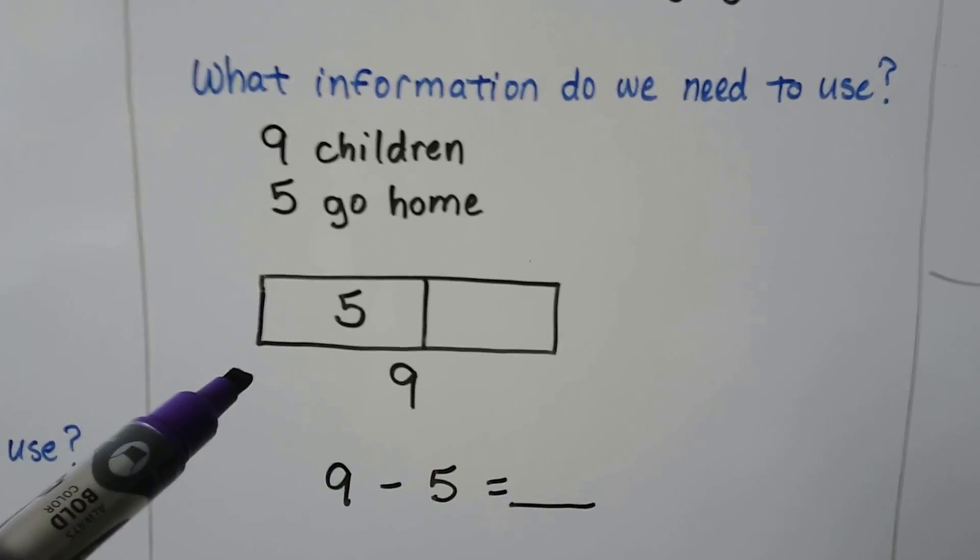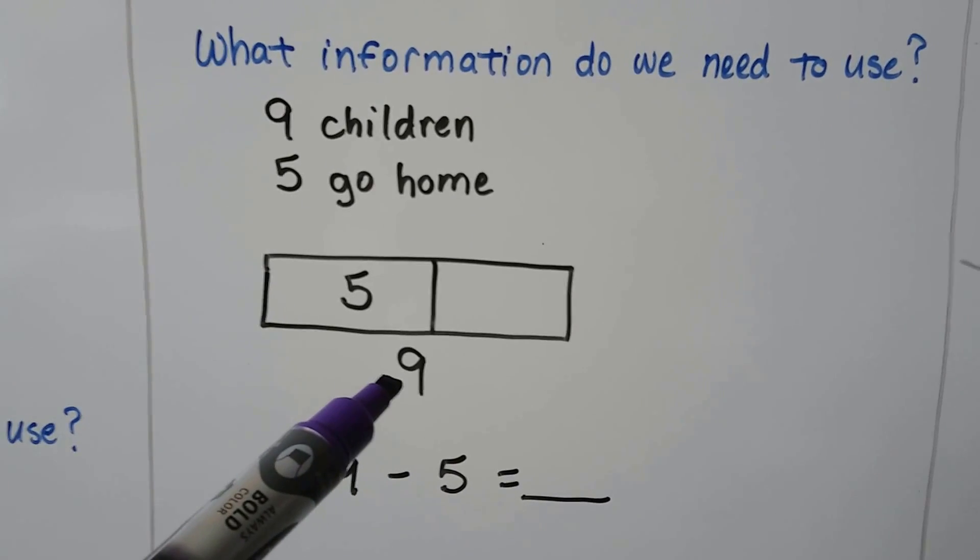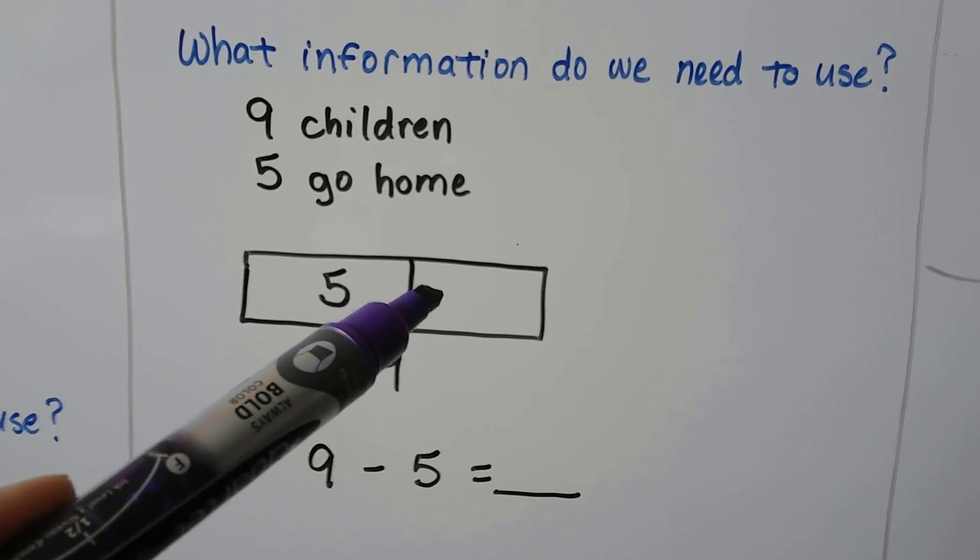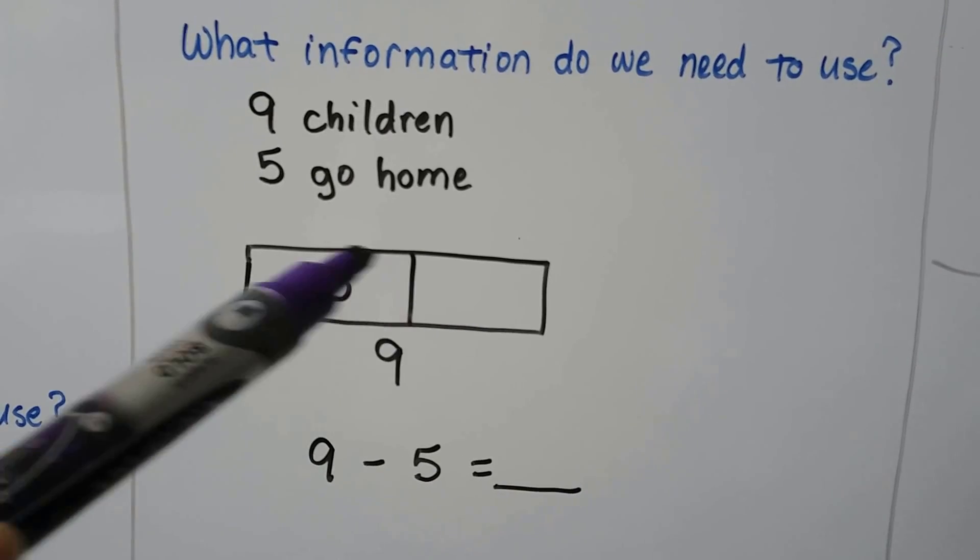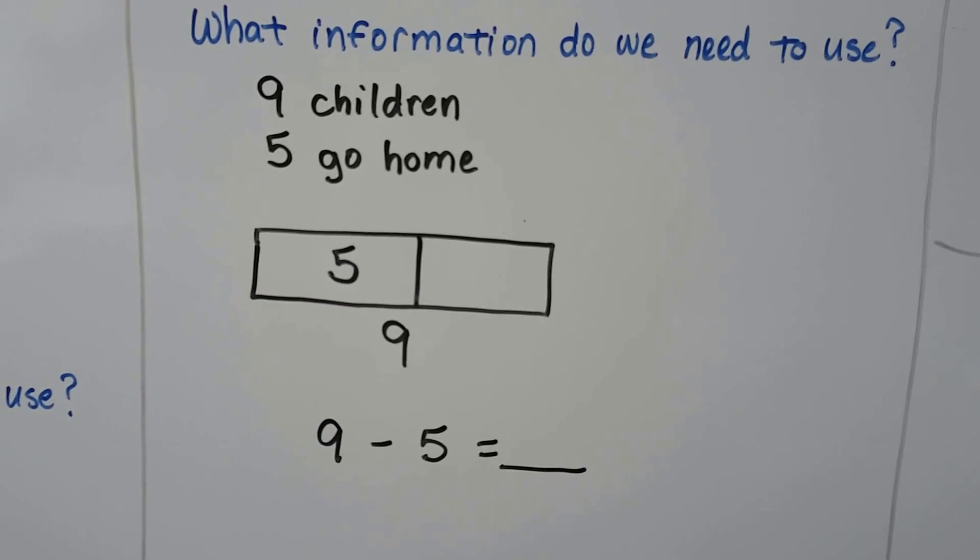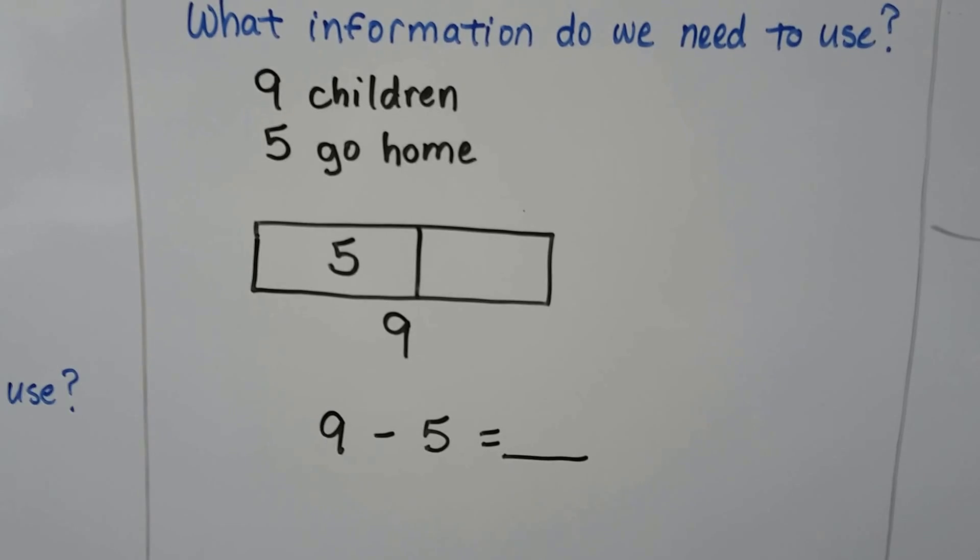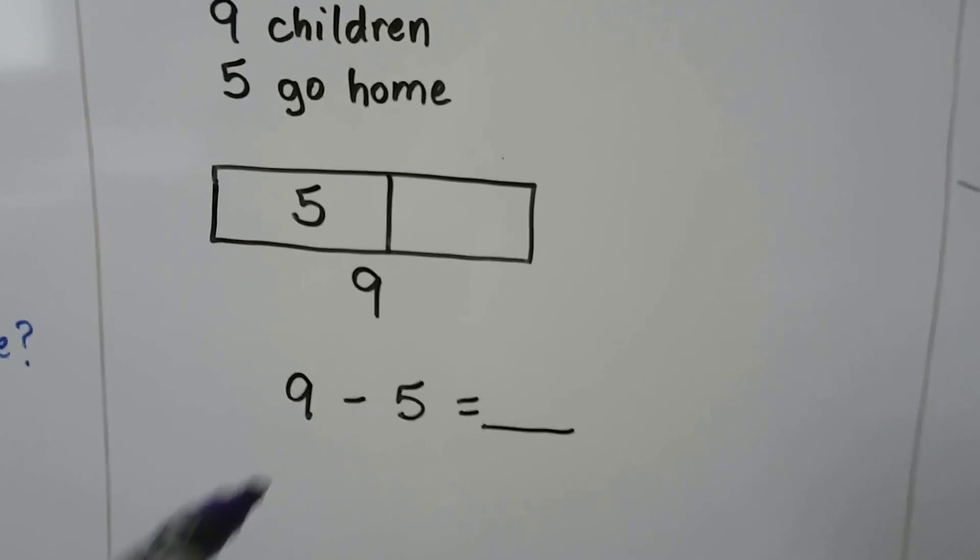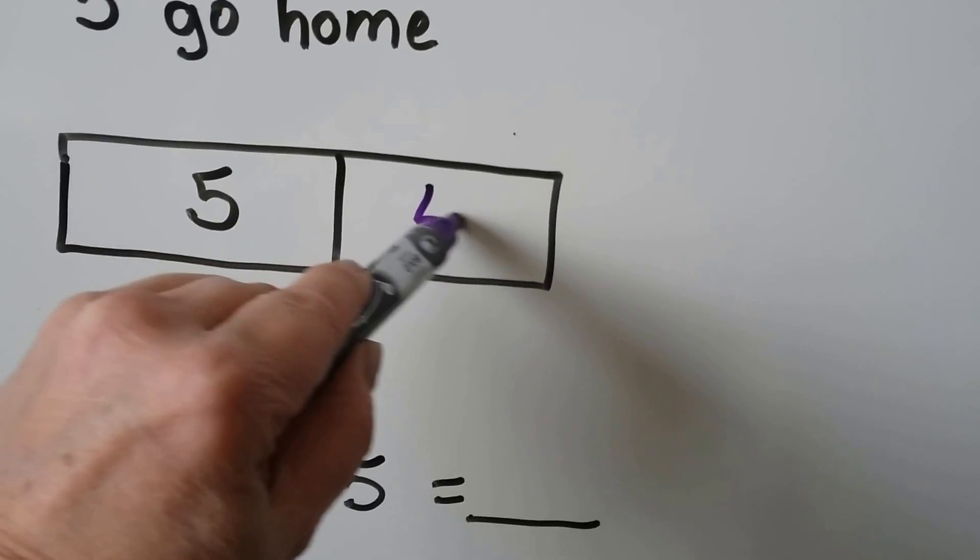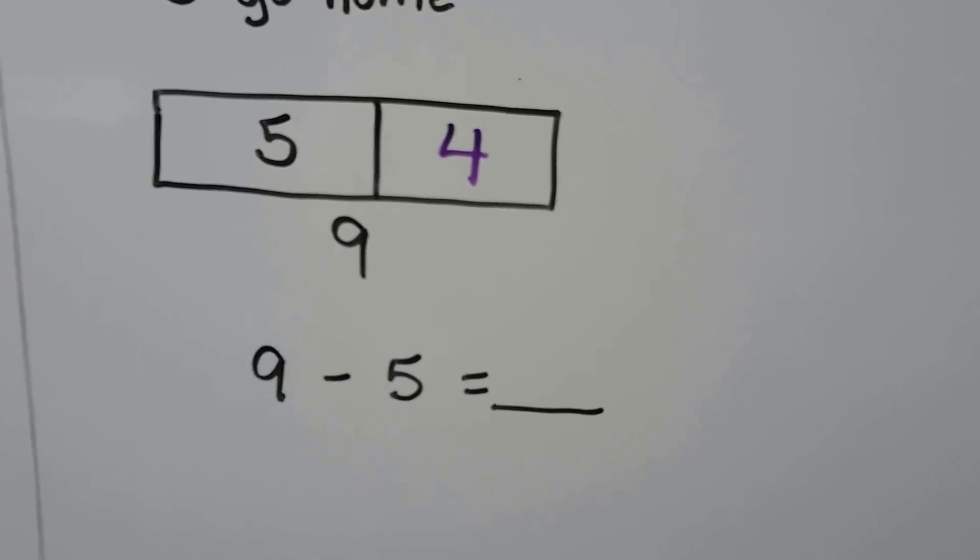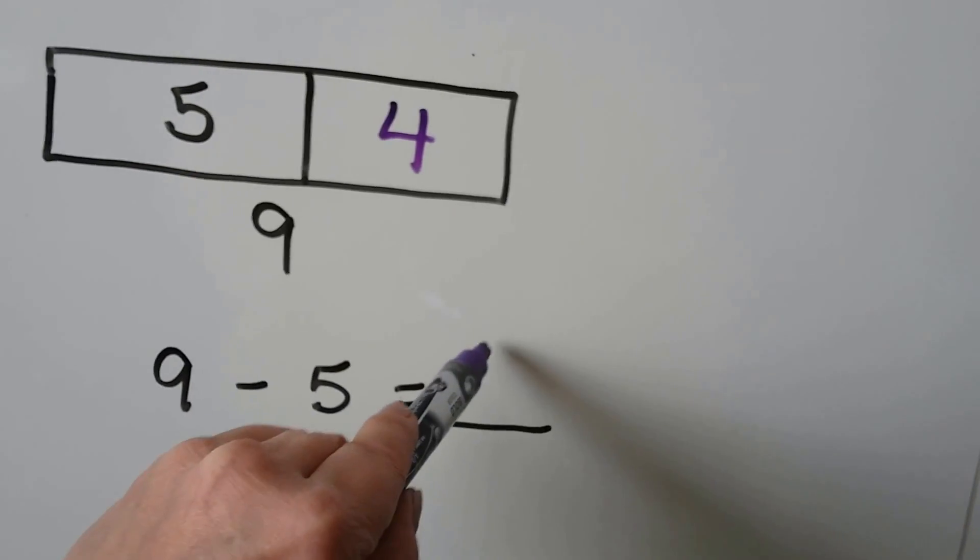We can use the bar model. There's nine children in all. Five go home. What number could go here with five added to it is equal to nine? What number is missing? If you said four, you're right. Five and four is equal to nine. Nine minus five is equal to four.